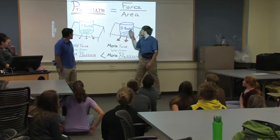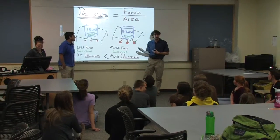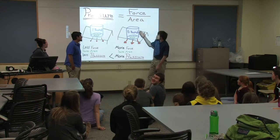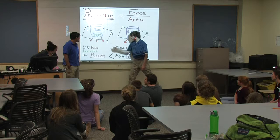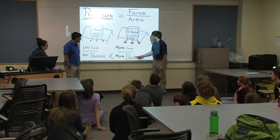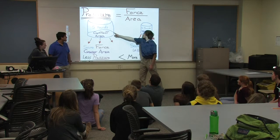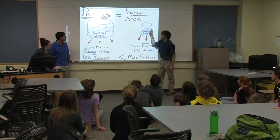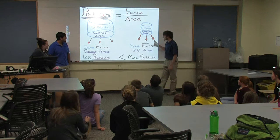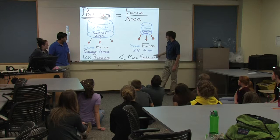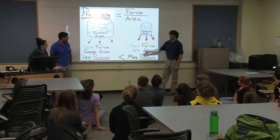For different amounts of force — and weight is a measurement of force — for different amounts of force over the same area, there will be less pressure for less force or more pressure for more force. And as we just saw, having the same weight — five pounds on this diagram in both cases — but a different area, you can have more pressure for less area and less pressure for a greater area.